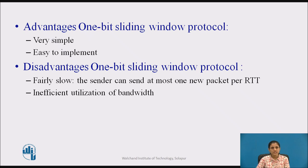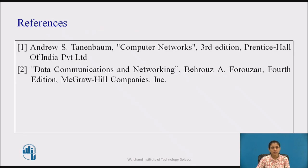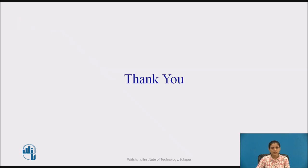The advantages of the 1-bit sliding window protocol are that it is very simple and easy to implement. The disadvantages are that it is fairly slow — the sender can send at most one new packet per RTT (round trip time) — and it results in inefficient utilization of bandwidth. This concludes the session on the working of the 1-bit sliding window protocol. Thank you.